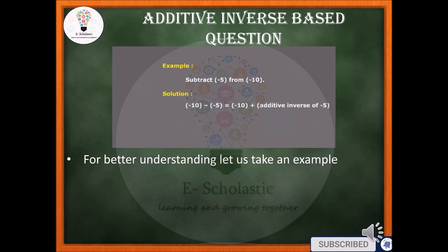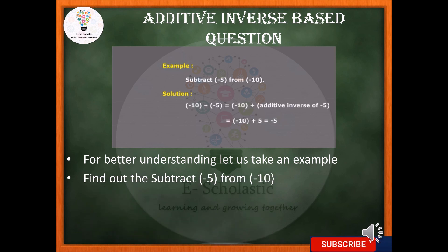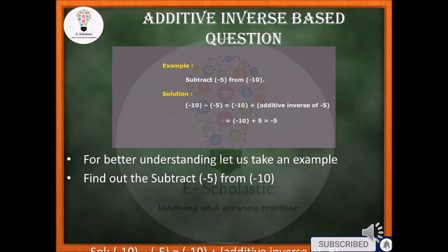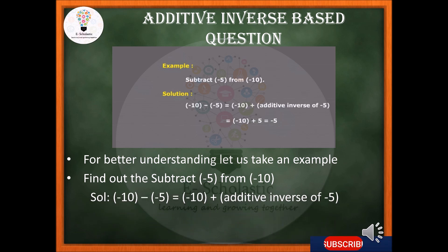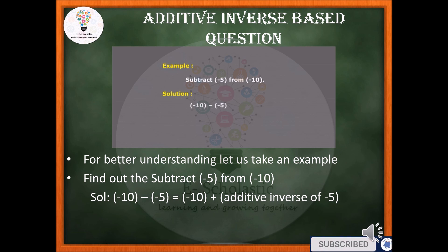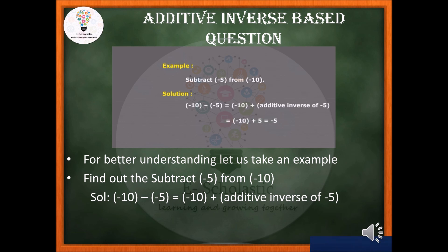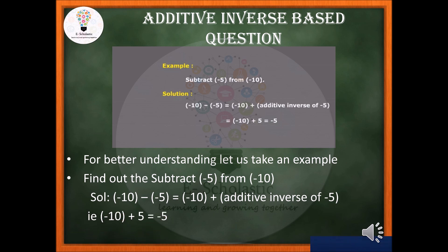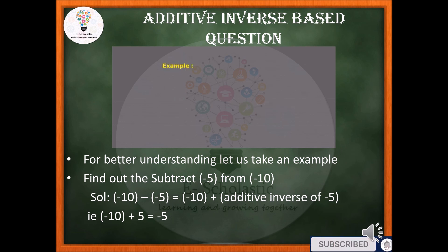For an additive inverse based question: subtract minus 5 from minus 10. That is minus 10 minus (minus 5). The two minus signs — the subtraction sign and the sign before 5 — become plus. So we get minus 10 plus 5, which is the additive inverse of minus 5, giving us minus 5.